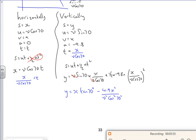A half times minus 9.8 is minus 4.9 X squared over V squared cos squared 70 there. So if you look at that equation now, I've got it in terms of X and V on the right hand side. So that's OK.